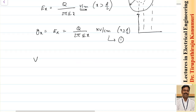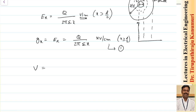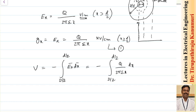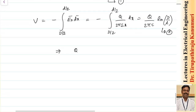To calculate the potential difference between two points, we integrate: V = ∫ from d/2 to D/2 of [q / (2πε·x)] dx. This gives V = (q / 2πε) · ln(D/d). Let this be equation number 2. From this, q / (2πε) = V / ln(D/d). Let this be equation number 3.